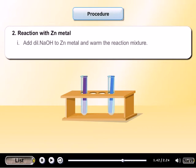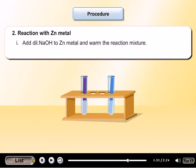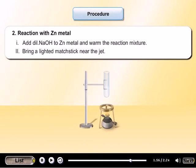Point number 2. Reaction with zinc metal. Add dilute NaOH to zinc metal and warm the reaction mixture. Bring a lighted matchstick near the jet.